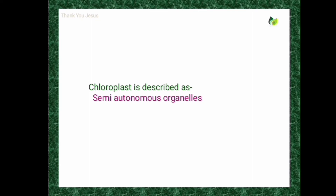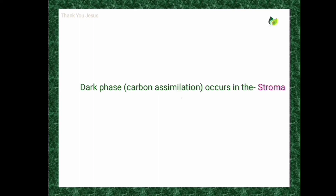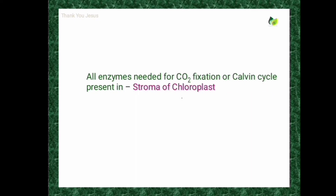Chloroplasts are called semi-autonomous organelles due to the presence of DNA, which allows them to self-duplicate. Light reactions of photosynthesis take place in the grana. The dark phase or carbon assimilation occurs in the stroma of the chloroplast. All enzymes needed for CO2 fixation or the Calvin cycle are present in the stroma of the chloroplast.